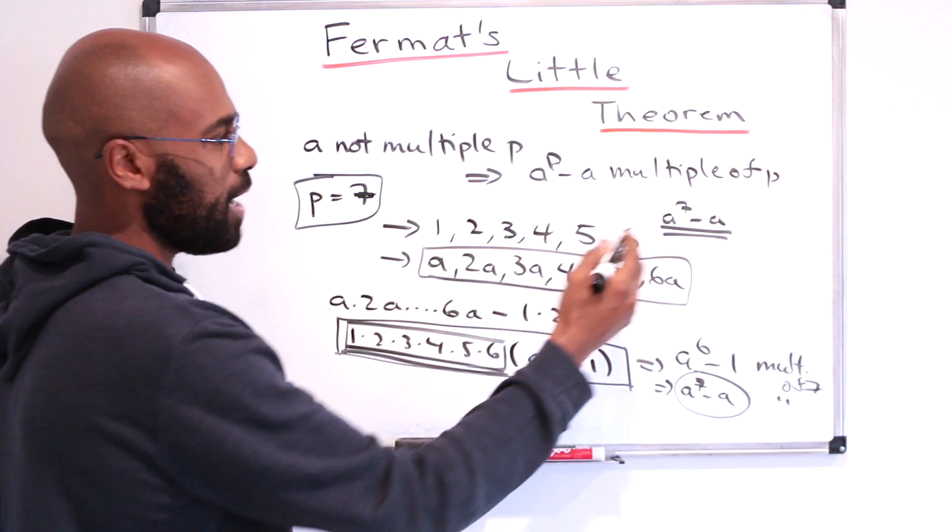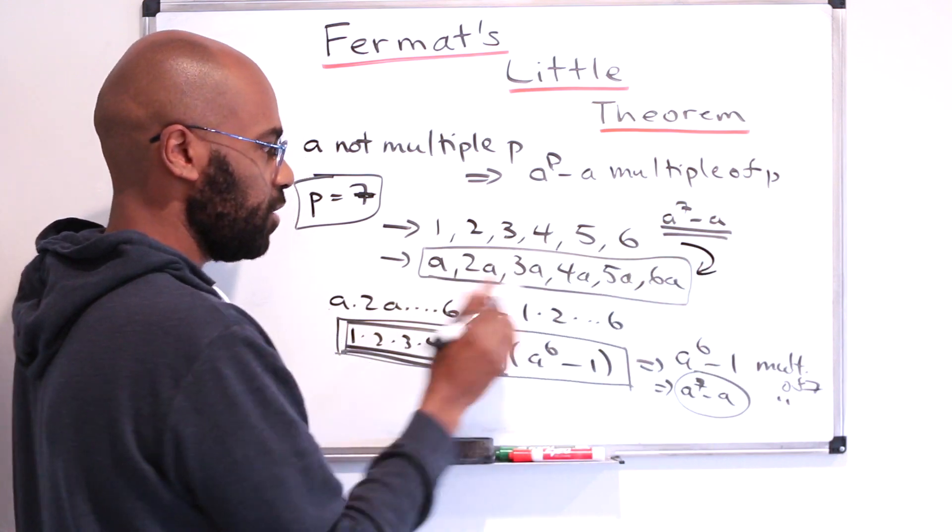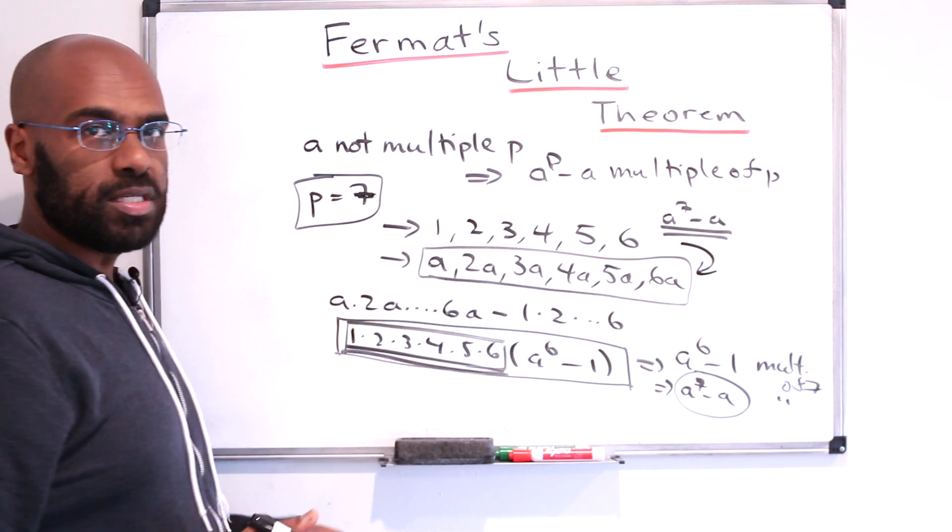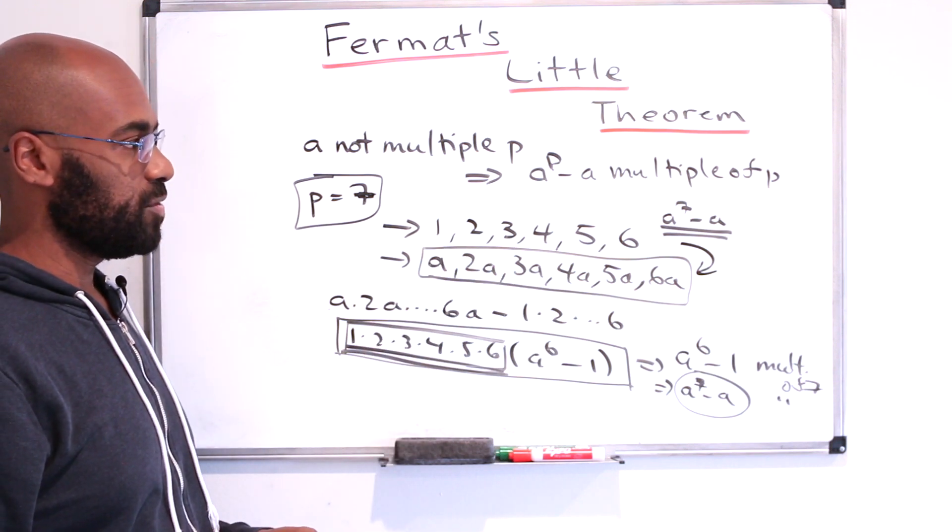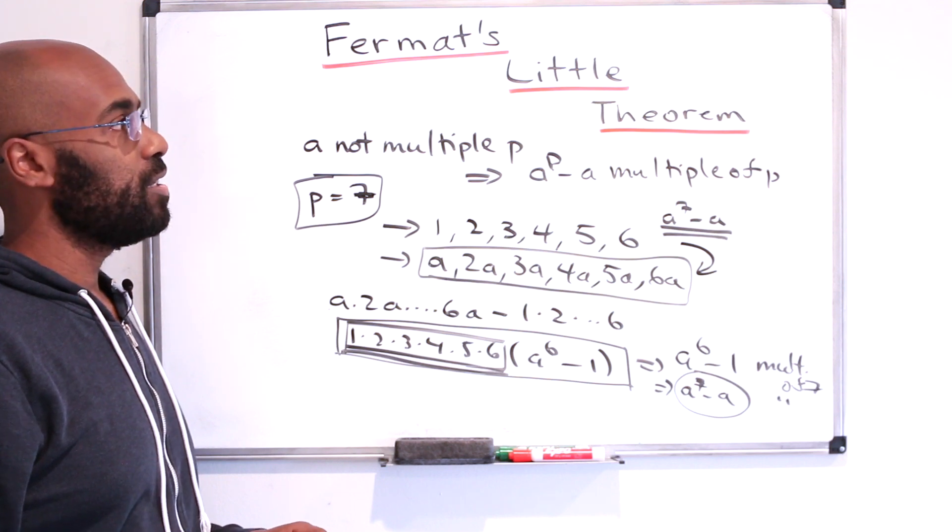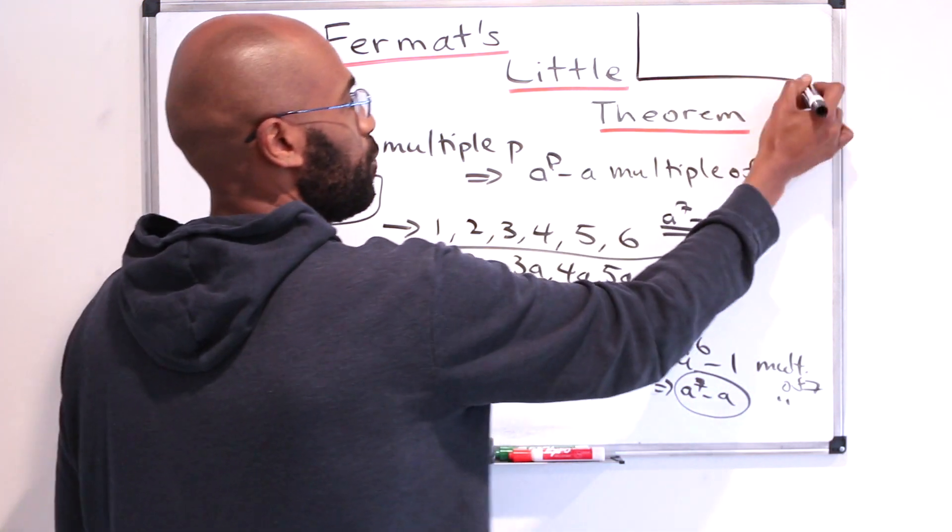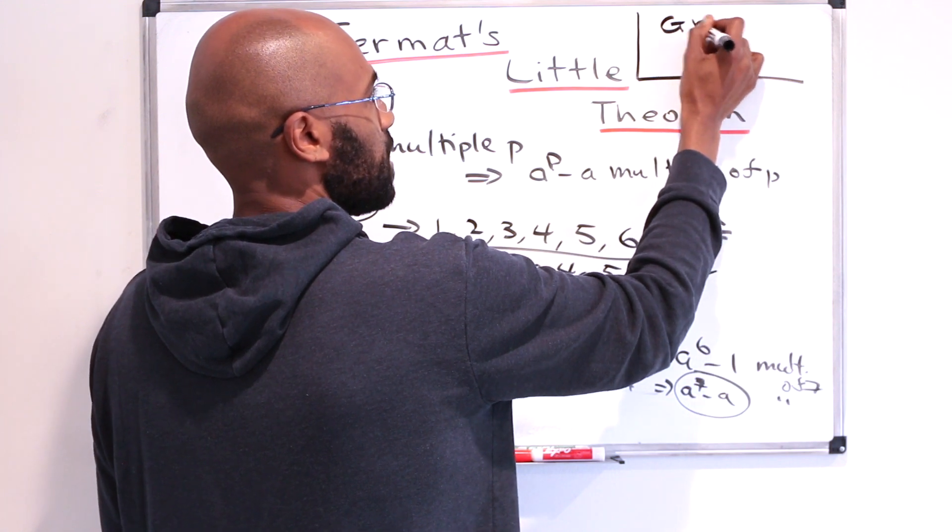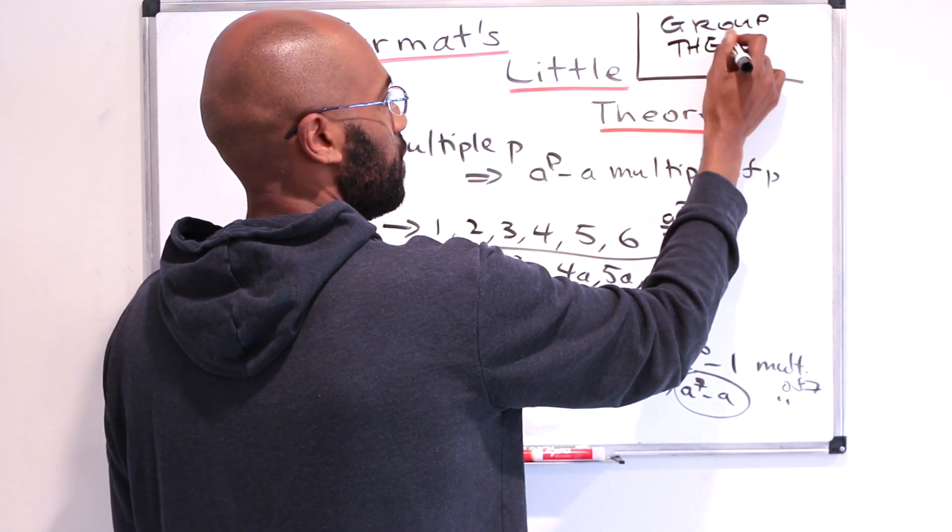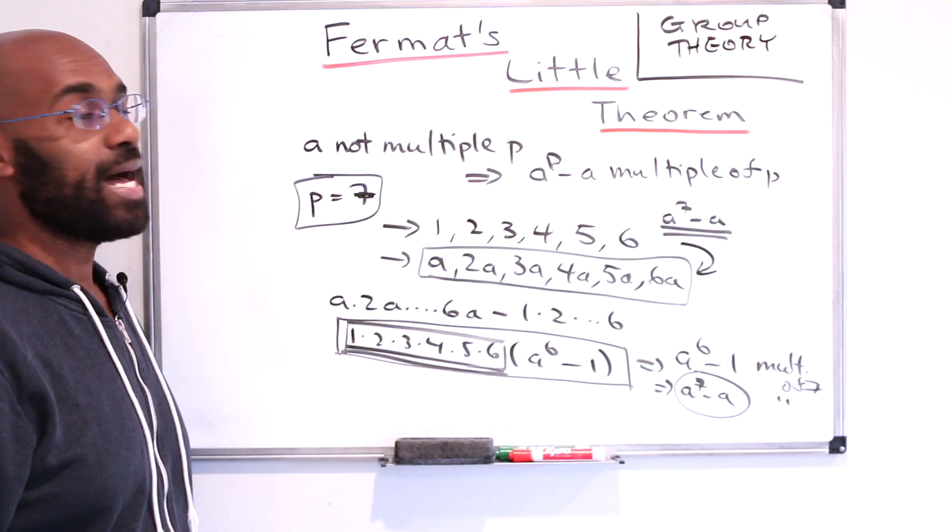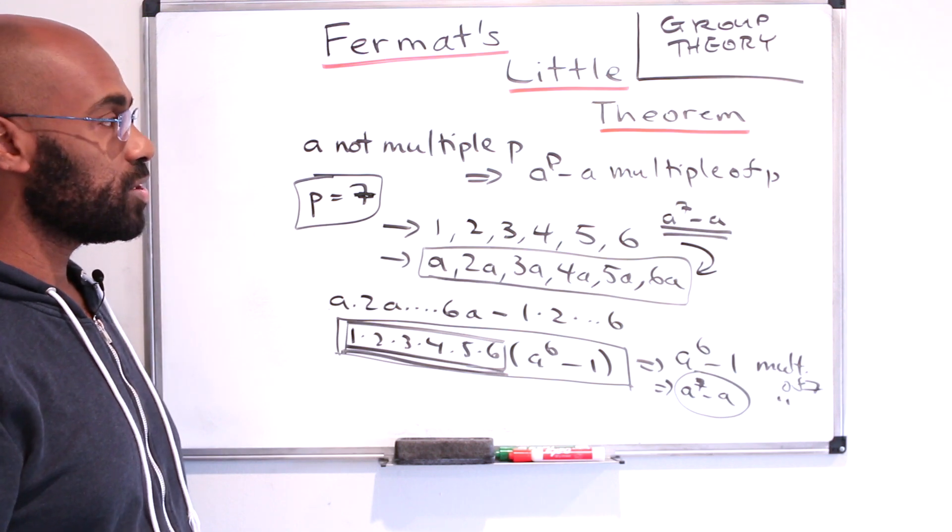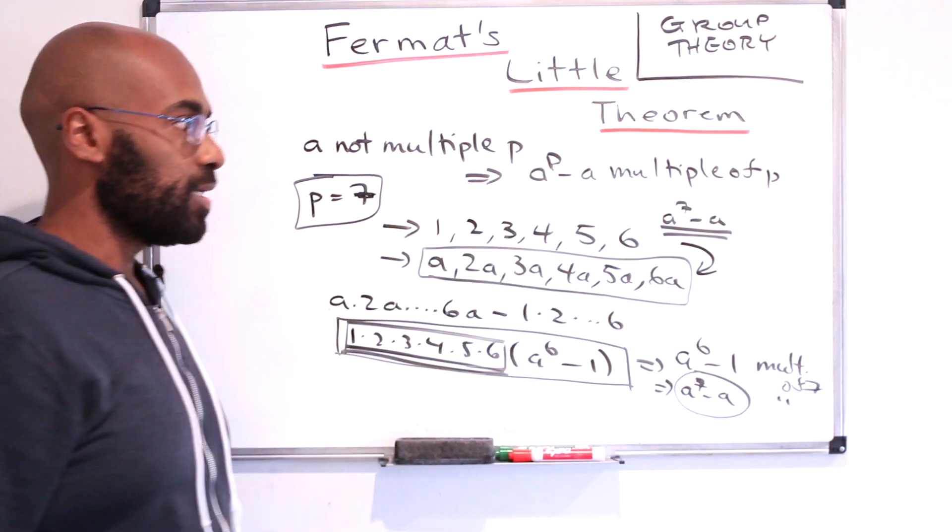Now the technique of coming up with this idea of multiplying by a and looking at the fact that all these things are all different when looking at divisibility by 7, is something that actually is inherited from ideas in what's called group theory. So there is a nice way to establish Fermat's little theorem with a bit more of an advanced algebraic framework, which one learns in an abstract algebra course when you talk about the concept of a group.